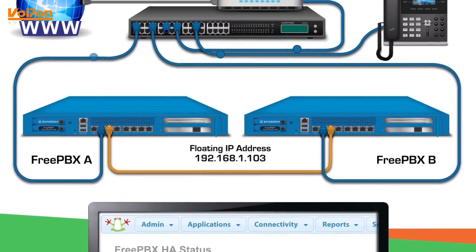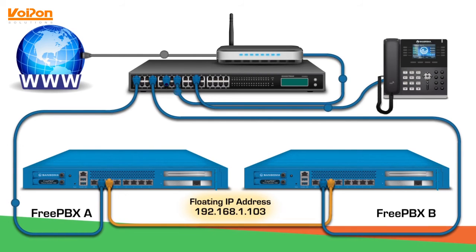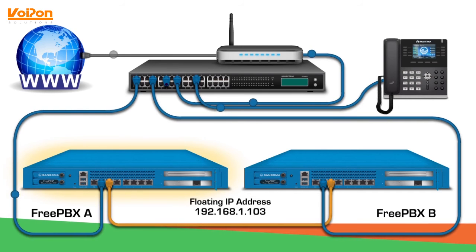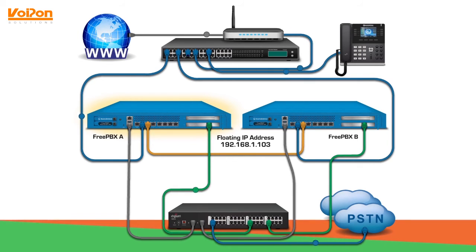The nodes are now syncing together and after a couple last prompts, the connection between both nodes will be complete. Your phones and devices are registered to the floating IP address you've just created, and SIP trunks will register to the active node through the same IP. Additionally, if utilizing a PSTN failover appliance, your T1 or analog lines will be directed to the active node as well.